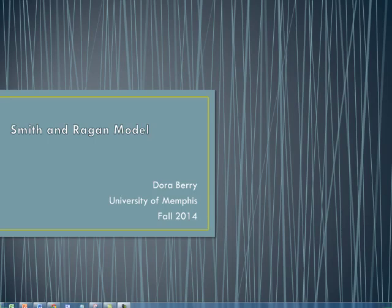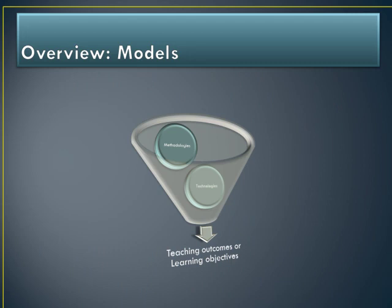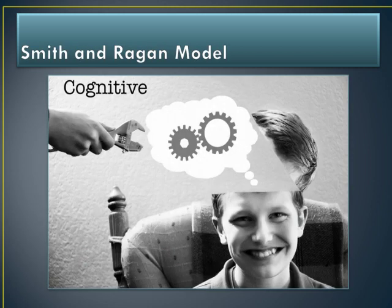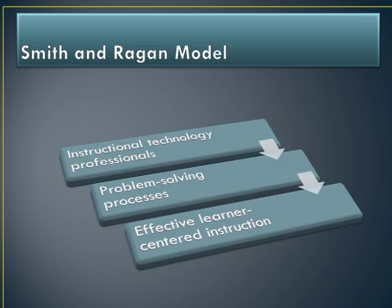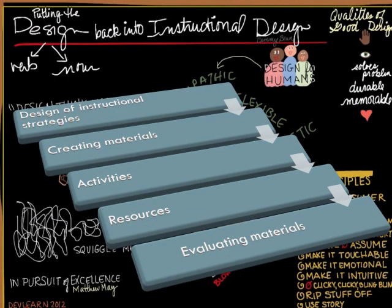The Smith and Reagan Module. Modules facilitate selecting technologies or methodologies to accomplish teaching outcomes or learning objectives. The Smith and Reagan Module focuses on cognitive psychology when designing instructional plans. This module is popular because instructional technology professionals follow a systematic route, centered in problem-solving processes with the intention of effective learning-centered instruction. The module emphasizes design of instructional strategies by creating materials, activities, resources, and evaluating materials.